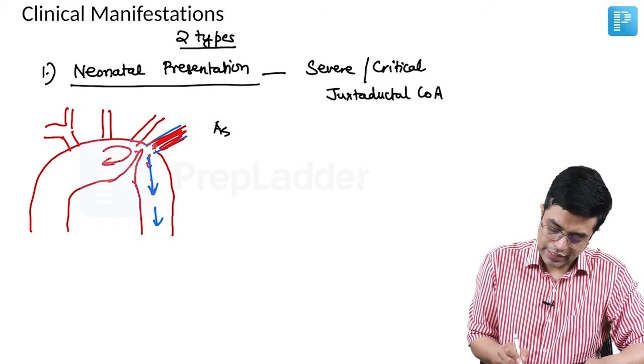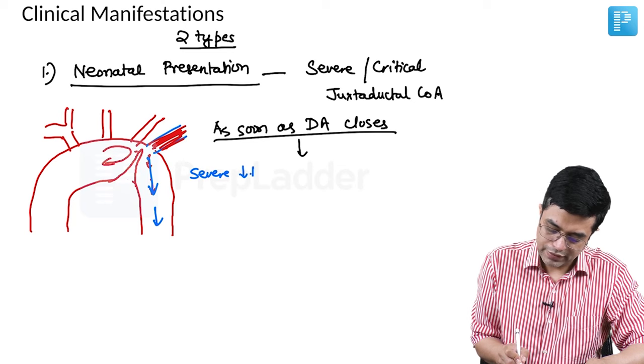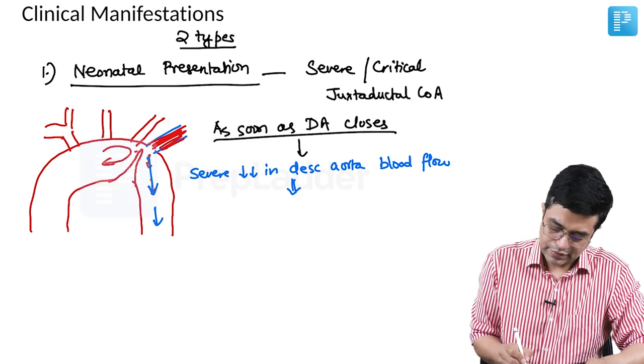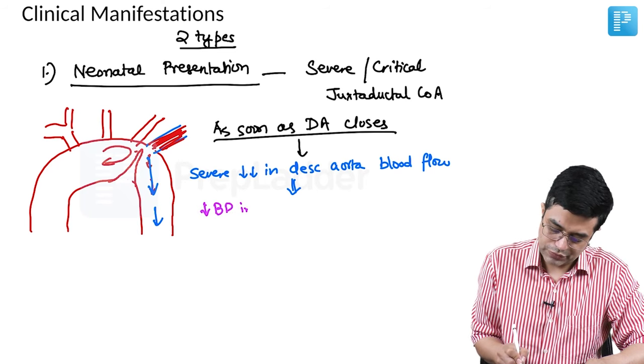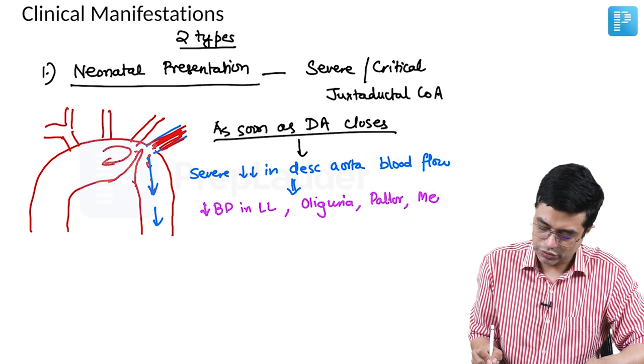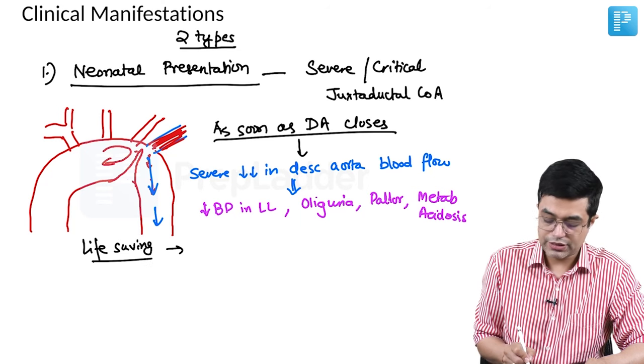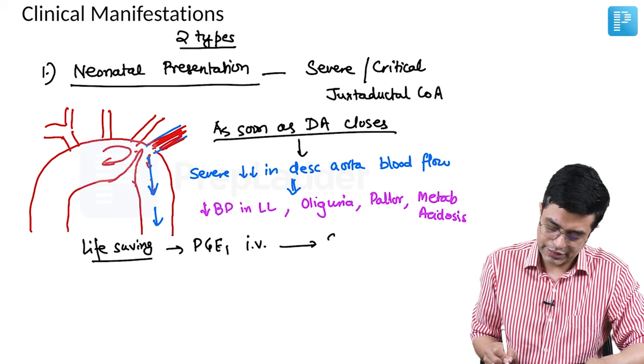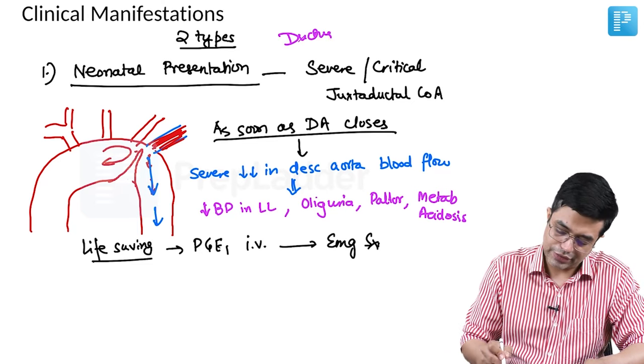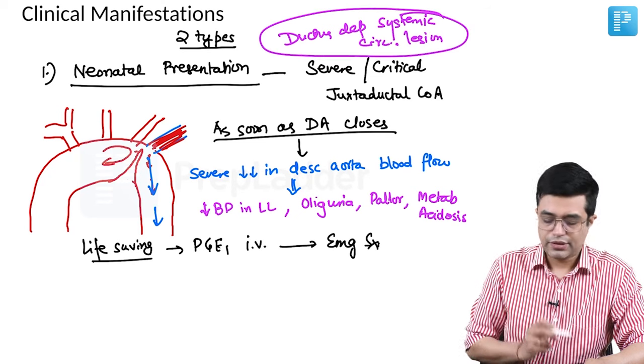As soon as ductus arteriosus closes, these children will have severe reduction in the descending aortic blood flow. This will manifest as fall in BP in the lower limbs. These children will develop oliguria, pallor, and metabolic acidosis. What is life saving in these patients? These patients need to be started on prostaglandin E1 IV infusion followed by emergency surgery. Neonatal presentation is a type of ductus dependent systemic circulatory lesion. This is the first form, rare but can be asked in exams.